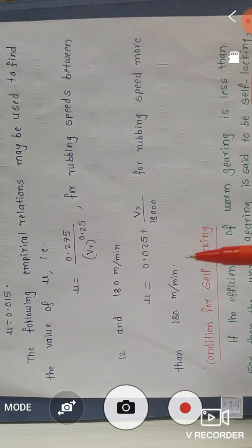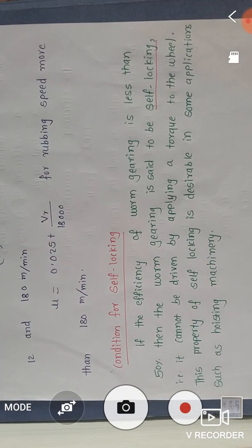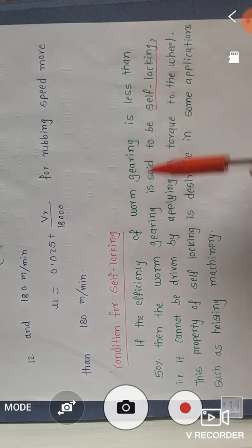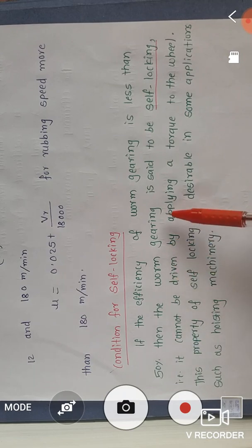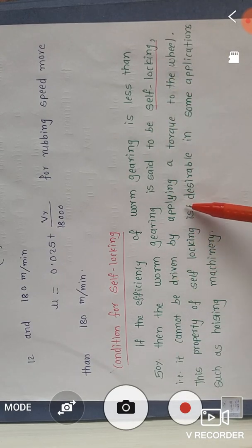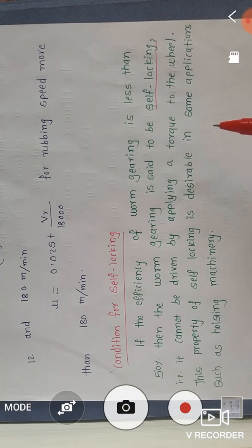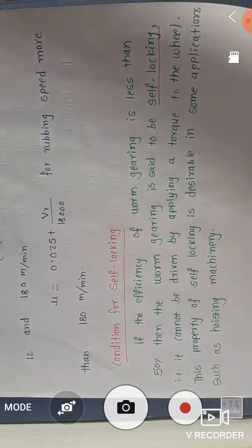The efficiency value is also important according to the self-locking condition. If the efficiency of worm gearing is less than 50 percent, then the worm gearing is said to be self-locking — that is, it cannot be driven by applying a torque to the wheel. This property of self-locking is desirable in some applications such as hoisting machinery.